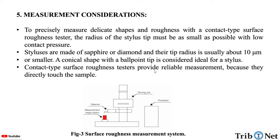Contact type surface roughness testers provide reliable measurement because they directly touch the surface of the sample. This is the surface roughness measurement system where we can see the detector, measurable instrument with the target object, driving unit, and processor.